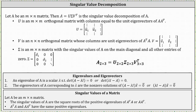Welcome to a lesson on how to determine the singular value decomposition of a given matrix. Let A be an M by N matrix, then A equals U times sigma times V transpose is the singular value decomposition of A.